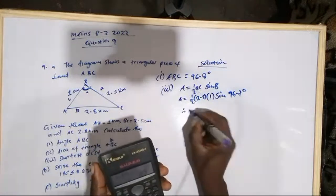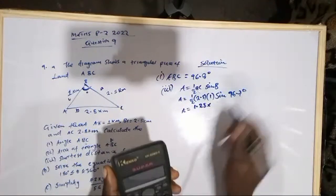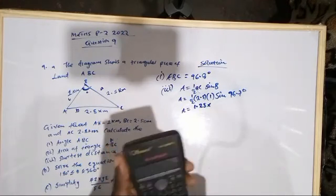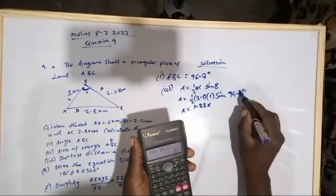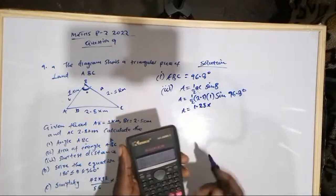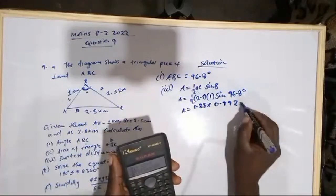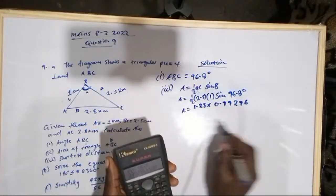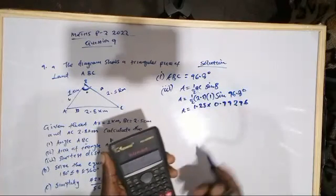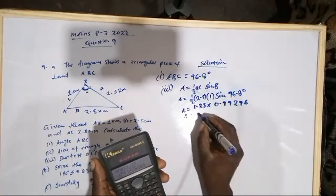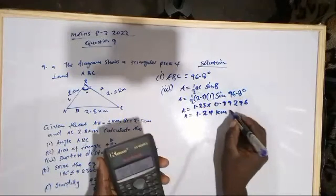Calculating: ½ × 2.5 × 1 = 1.25. Then sin(96.8°) ≈ 0.99296. Multiplying: Area = 1.25 × 0.99296 ≈ 1.24 km². So the area of triangle ABC is approximately 1.24 square kilometers.